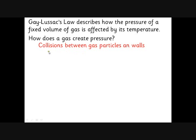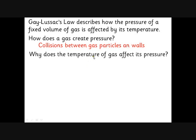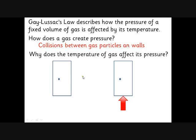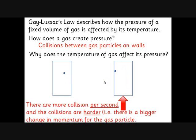A gas creates pressure because the gas particles collide with the walls of the container. How does temperature affect that? If we look at a hot gas and a cold gas — just one particle in each container — the hot one is moving faster, as you may remember from GCSE. But why does this create more pressure? Well, there are two factors. One is that there are more collisions per second — this particle hits the top wall more times in the same amount of time.